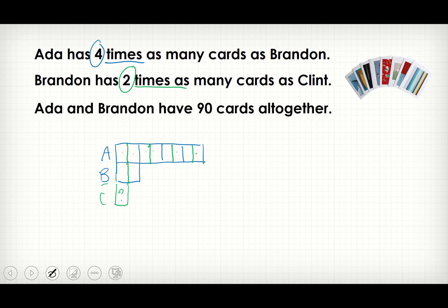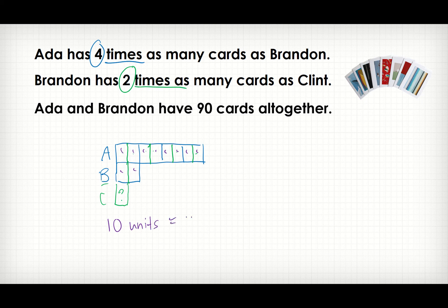Ada and Brandon have 90 cards altogether. From my model, Ada and Brandon together have ten units. So I know that ten units is equal to 90 cards.